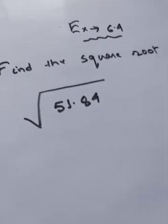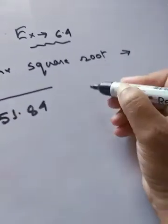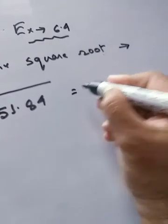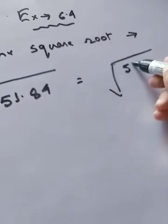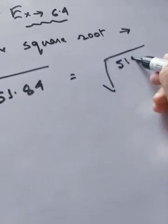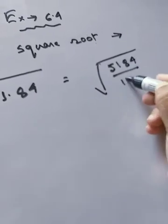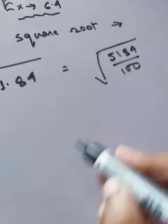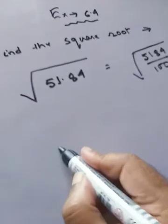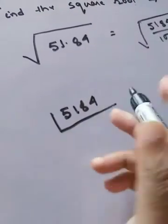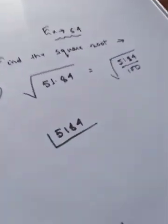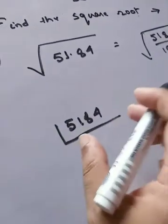Let's move on to sum number three: find the square root of 51.84. First, convert the decimal form to fractional form — that is 5184 over 100. Now let's do the prime factorization. It is a very important process.